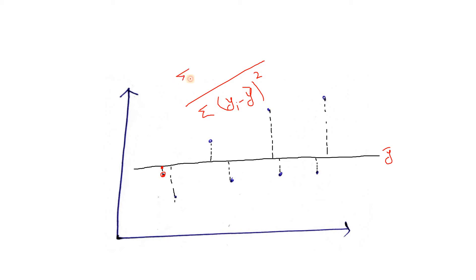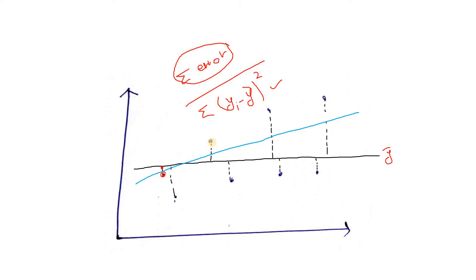We divide our residual sum of squares — (actual y minus predicted y)² summed over all data points — by this total sum of squares. Intuitively, if our linear regression line is a very good fit on the data set, the sum of squared errors with respect to that regression line will be less than the errors calculated with respect to the mean line.